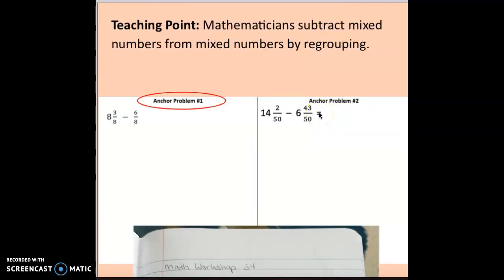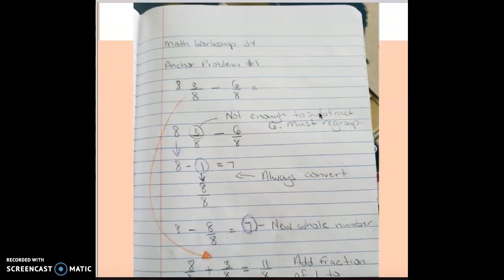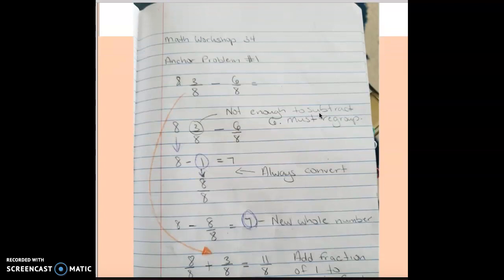The teaching point today is mathematicians subtract mixed numbers from mixed numbers by regrouping. Let's look at anchor problem number one: eight and three eighths minus six eighths. I'll do this in my notebook to show my thinking clearly.